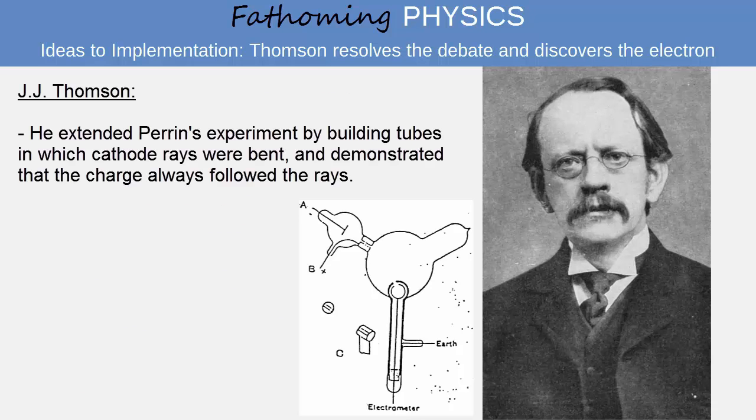Objectors to Perrin's experiment had argued that there might be negative charges moving through cathode ray tubes as well as cathode rays, but that Perrin had not demonstrated sufficiently conclusively that cathode rays were inextricably tied to these negative charges. That is, perhaps there were both light rays and some secondary course responsible for the negative charges.